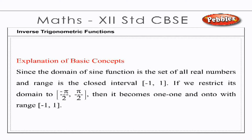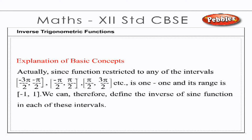Since the domain of the sine function is the set of all real numbers and the range is the closed interval [−1, 1], if we restrict its domain to [−π/2, π/2], then it becomes one-to-one and onto with range [−1, 1]. Actually, the sine function restricted to any of the intervals [−3π/2, −π/2], [−π/2, π/2], [π/2, 3π/2], etc., is one-to-one and its range is [−1, 1].